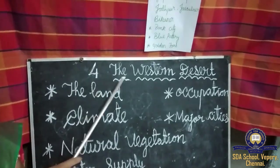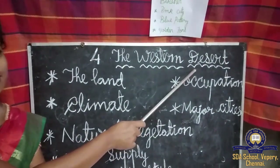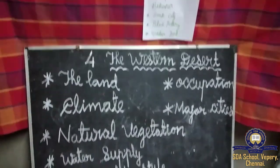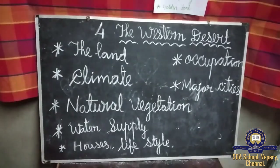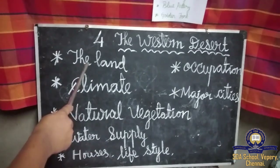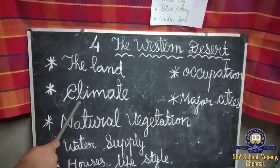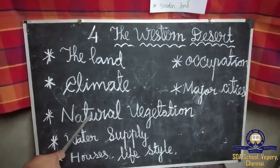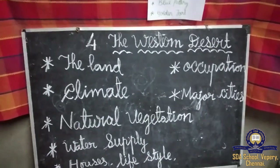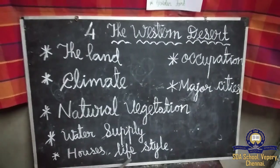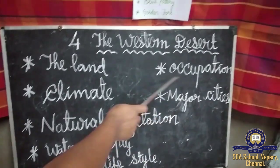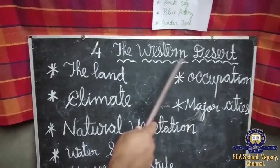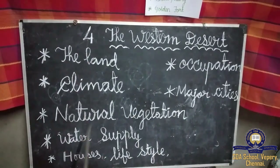The title is 'The Western Desert.' The subtopics we will cover are: the land, climate, natural vegetation, water supply, houses and lifestyle, occupation, and major cities.